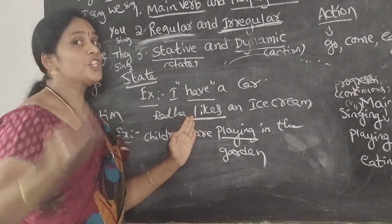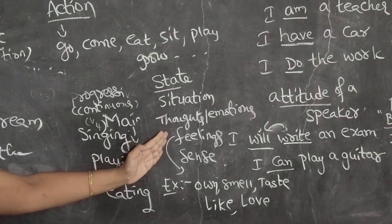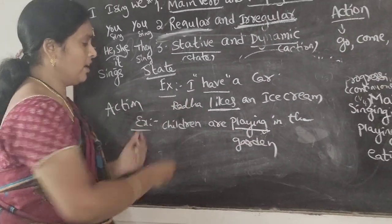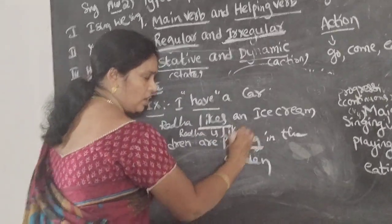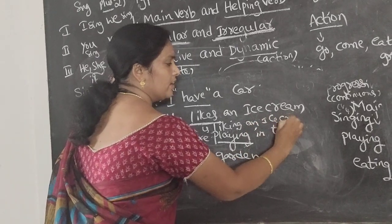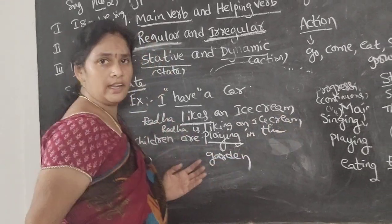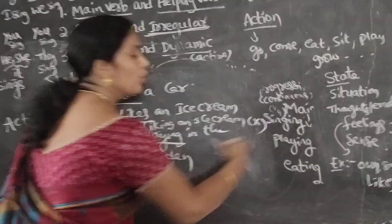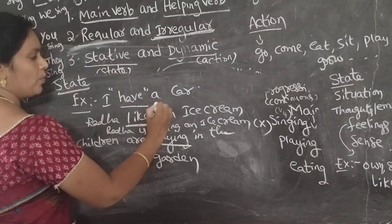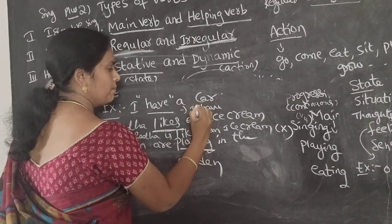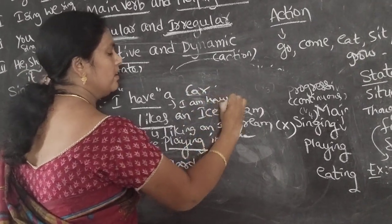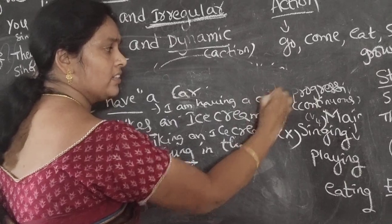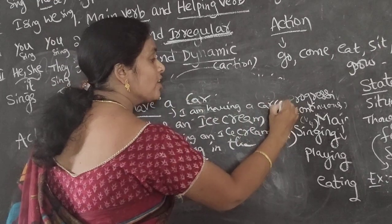So children, here the emotion is telling. Can we say: Radha is liking an ice cream? No, we cannot write like that. Or: I am having a car — can you say like this? No. We cannot say like this. Why? Because in English there is no continuous form for stative verbs.